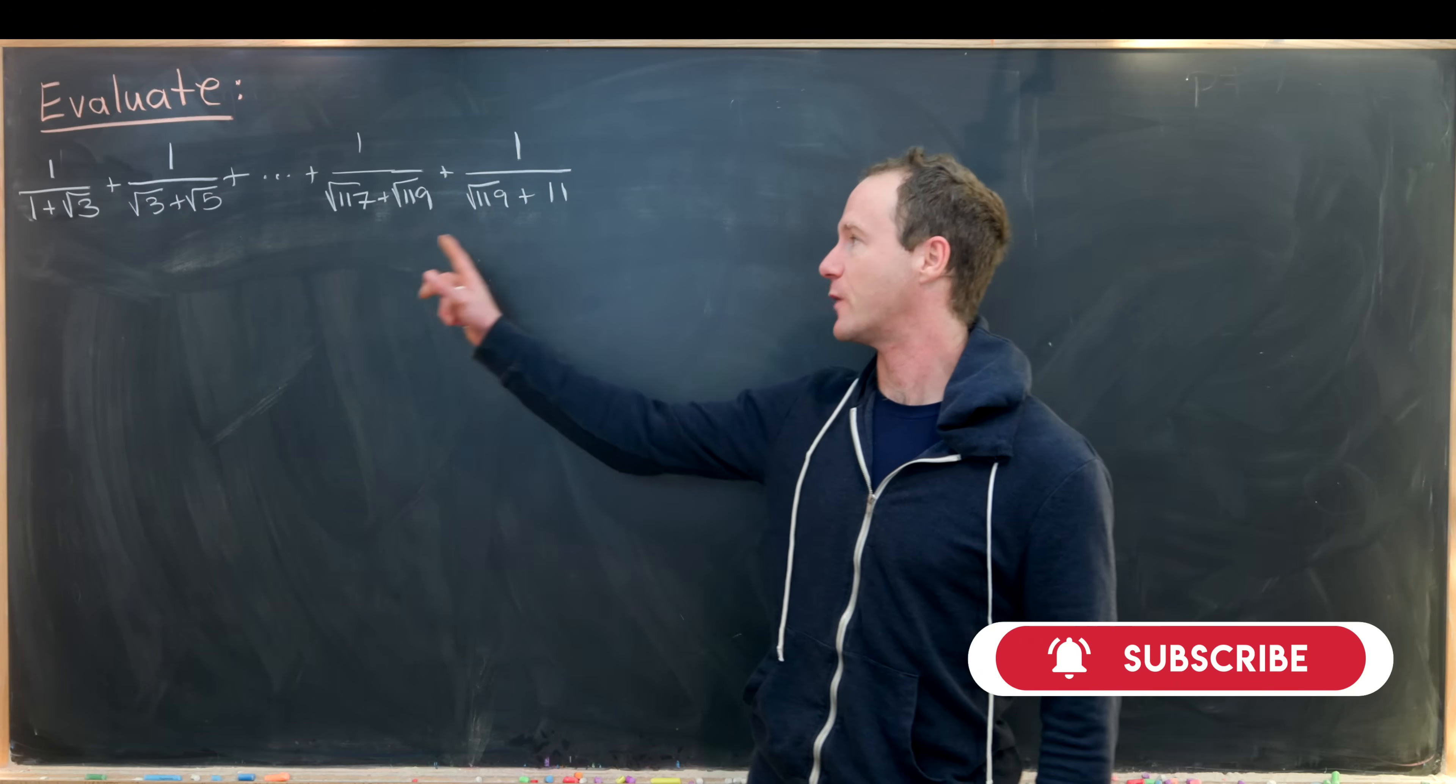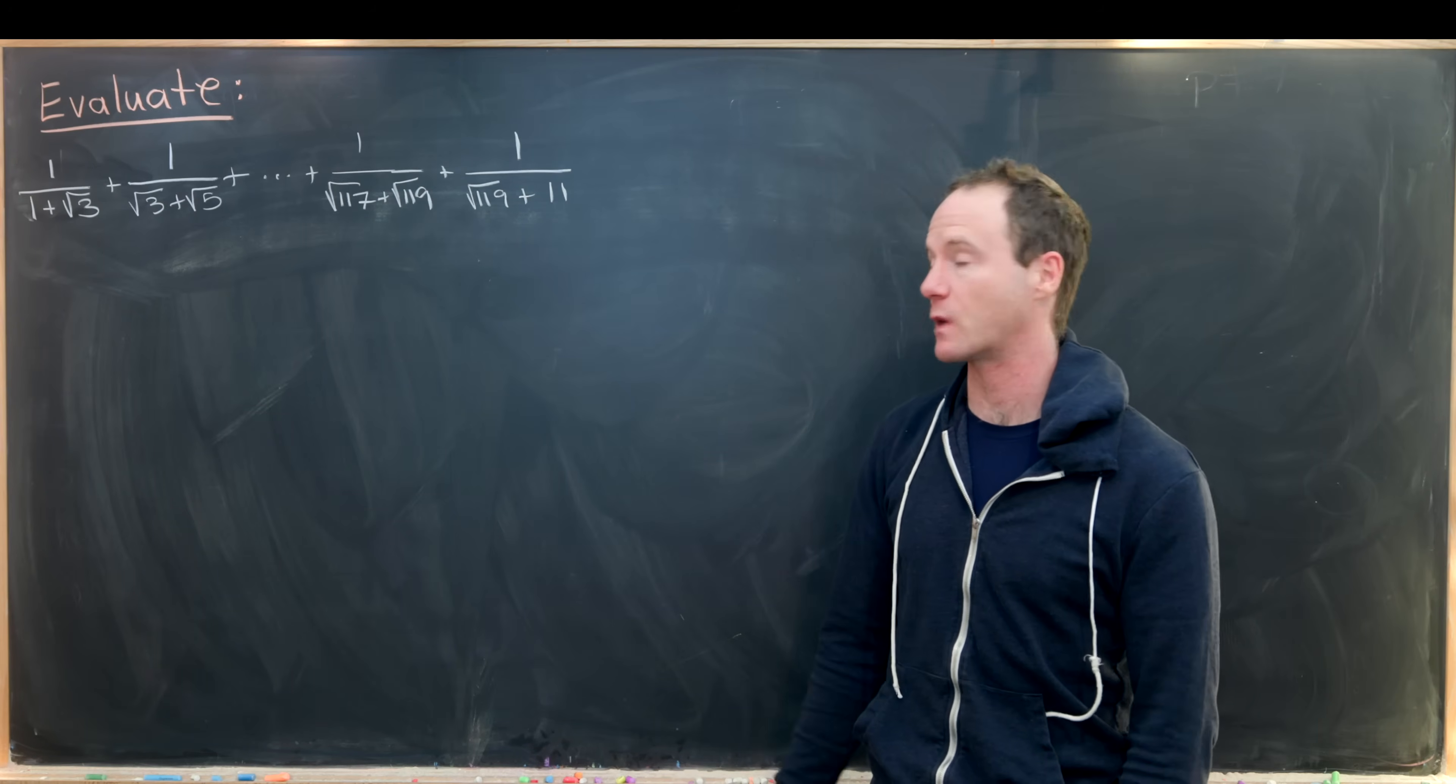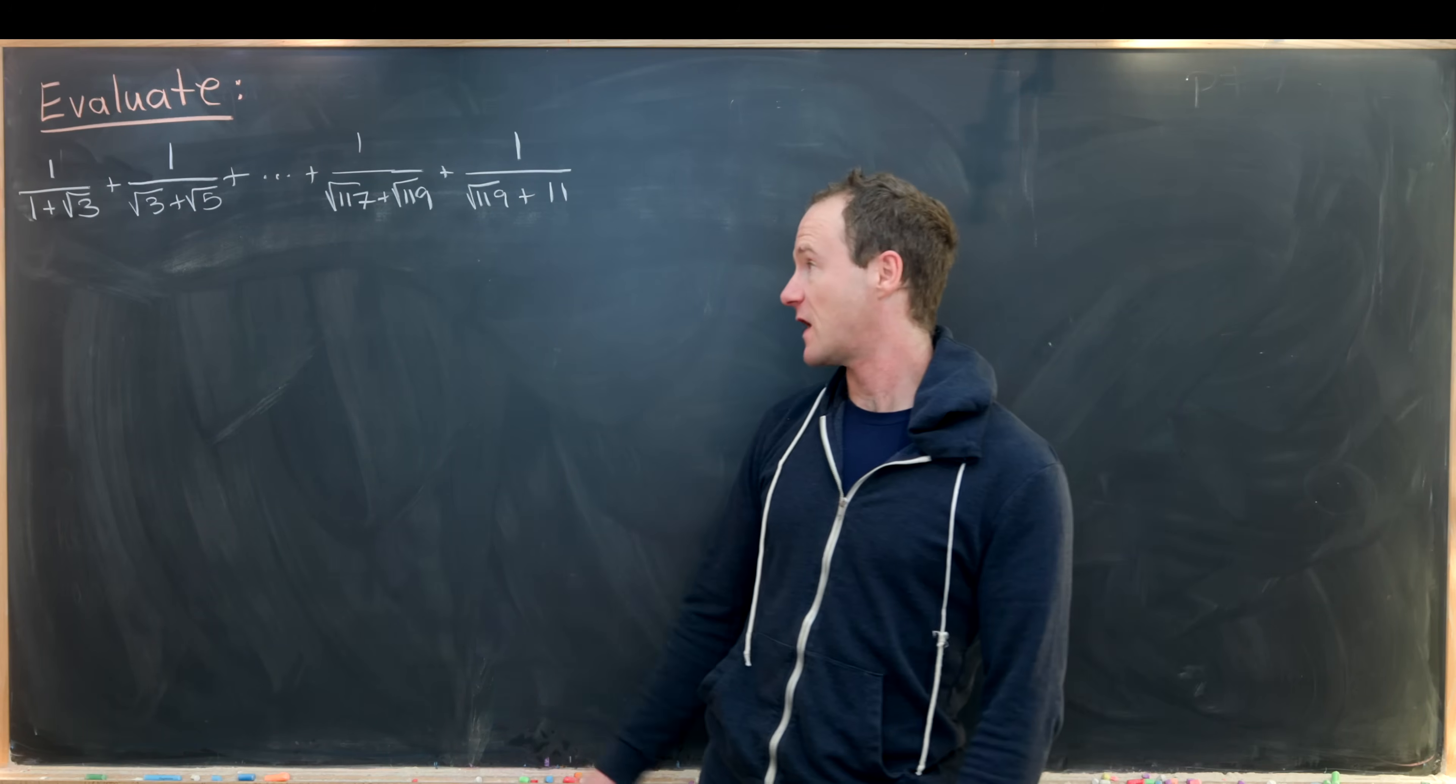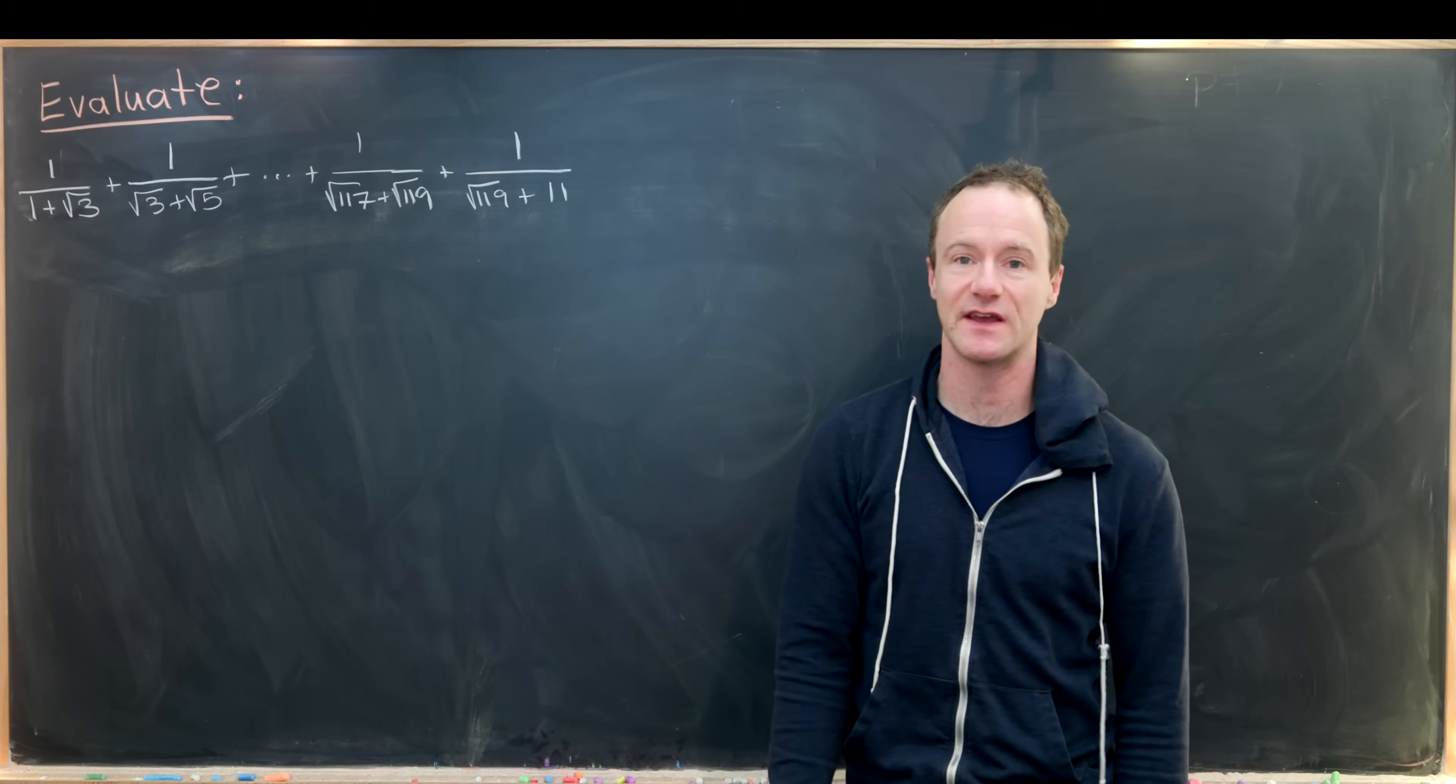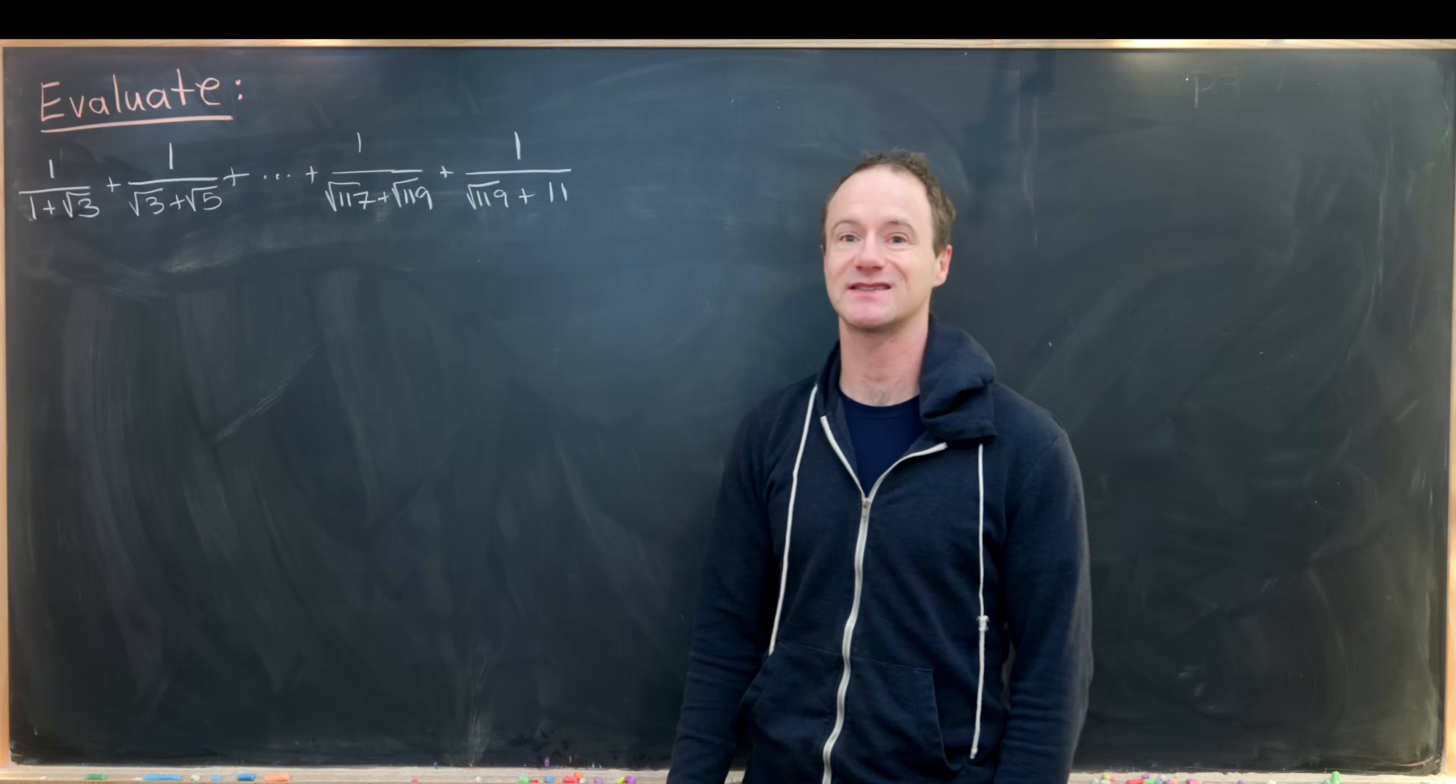Our goal is to evaluate the following finite sum: 1/(1+√3) + 1/(√3+√5) + ... all the way up to these last two terms, 1/(√117+√119) + 1/(√119+11).